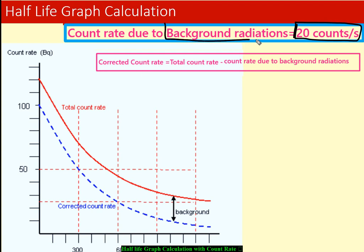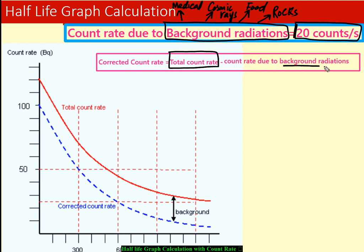Background radiations are certain types of radiation that are always present around us. Their sources can include medical sources, cosmic rays, food, and rocks. If we subtract the background radiation from the total count rate, we get the count rate due to the radioactive sample alone.